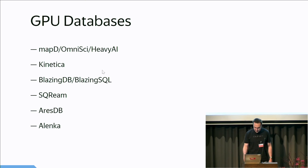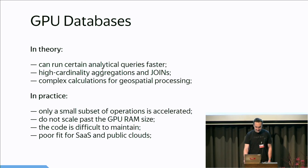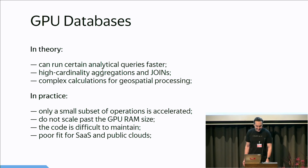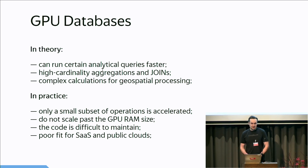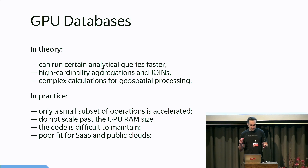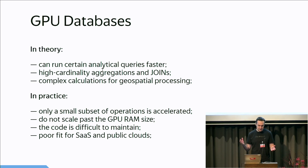MapD is also alive, and Kinetica is still alive — but the reason is actually they all suck. So let me provide some arguments. In theory, GPU databases can run certain analytical queries faster — queries with large sorting, large aggregations, large joins, maybe. They can do faster some complex calculations like conversion between different coordinate systems for geospatial processing. But in practice, they have to specialize the code for certain operations, and only a small subset of operations is actually accelerated.